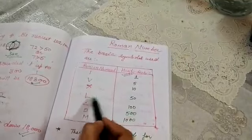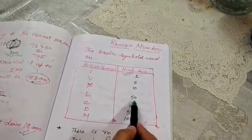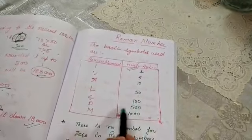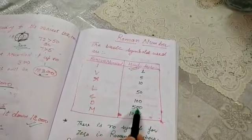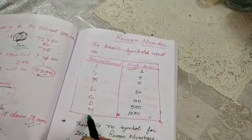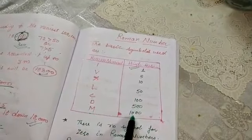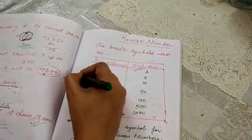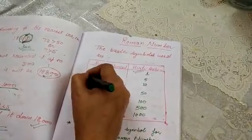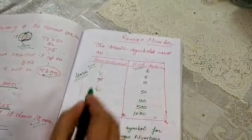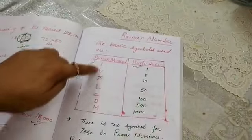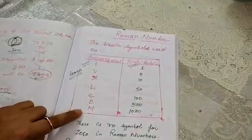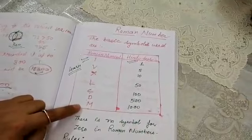L means 50, C means 100, D means 500, and M means 1000. You have to learn these basic symbols, because if you know these symbols, then you can make any number or counting.